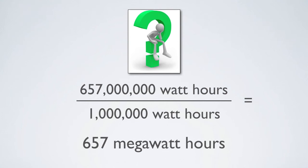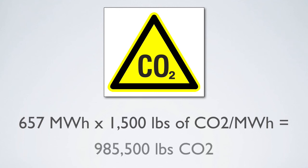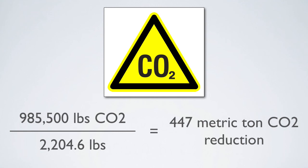Now that we have the activity data and the emission factor expressed in the same units, we can calculate the greenhouse gas savings from the lighting improvement. 657 megawatt-hours times 1,500 pounds of CO2 per megawatt-hour gives us 985,500 pounds of CO2. Since these are CO2 emissions, we do not need to multiply by the global warming potential. The final step is to divide our pounds of CO2 by 2,204.6 to convert the greenhouse gas savings to metric tons. This tells us that the lighting improvements will reduce greenhouse gas emissions by 447 metric tons each year.